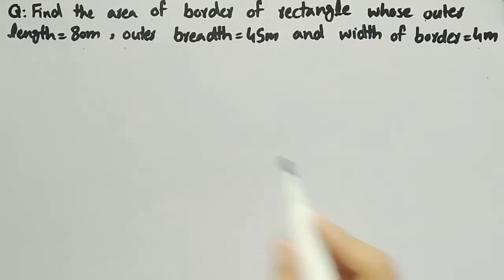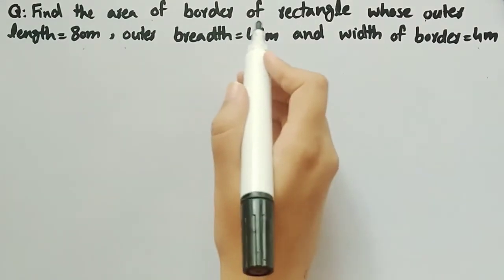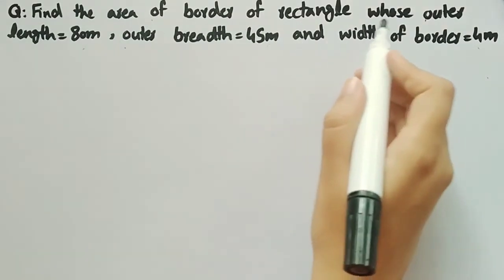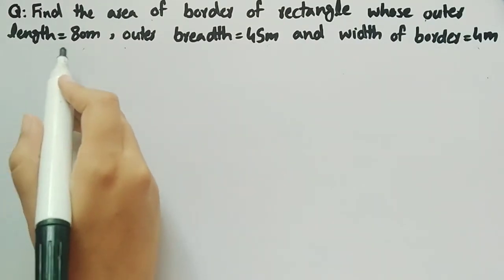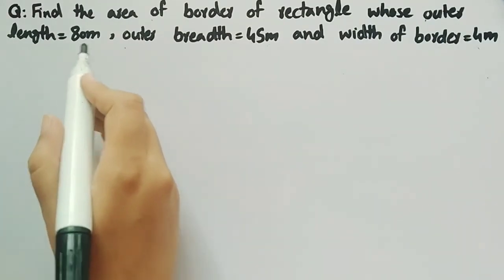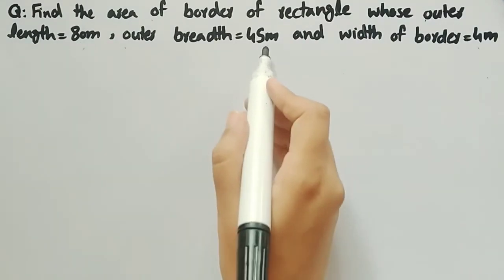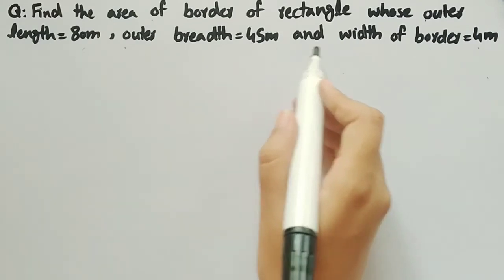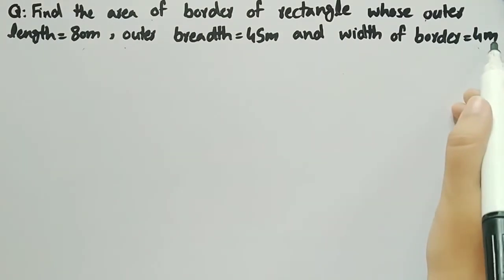In this video we will find the area of the border of a rectangle whose outer length is 80 meters, outer breadth is 45 meters, and width of the border is 4 meters.